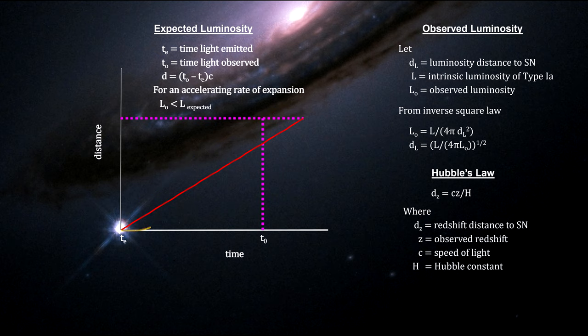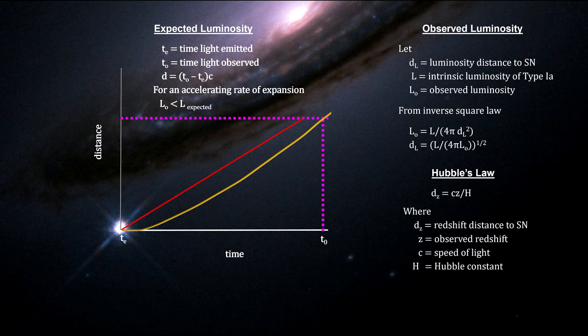By the same token, if the expansion is speeding up, the expansion rate in the past would have been smaller than what we see now, which means it would have taken a longer time to expand from its size at light emission time to its present distance compared to a non-accelerating universe. This would result in a longer light travel time, larger distance traveled, and a dimmer observed supernova compared to a non-accelerating universe. This is what both studies found. The universe is expanding, and the expansion is accelerating.